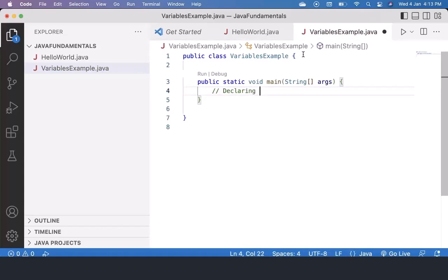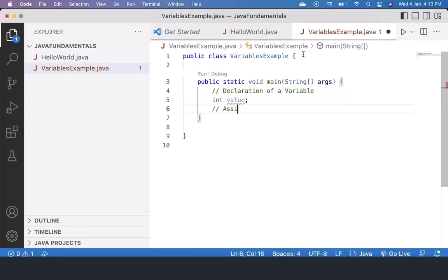Declaring declaration of a variable. Let's say I'm going to hold an integer value. After that I'm assigning a value to it: value equals to 100. You can also combine these two operations, that is declaration and assignment together. That's known as an initialization.